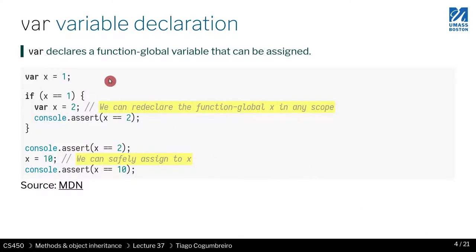So the first one, perhaps the most common one, is called var. And what var does, it defines a function-global variable. So if you define, look at this example, what we do is first we define a variable x, and we assign number one.